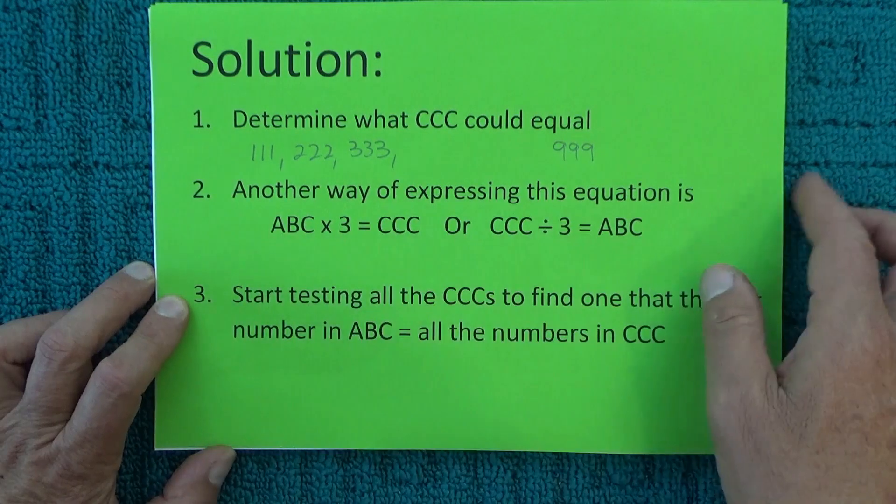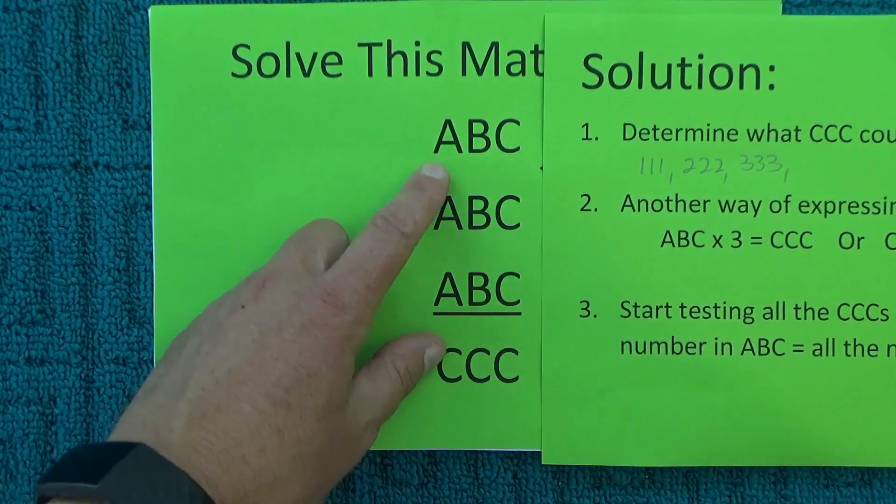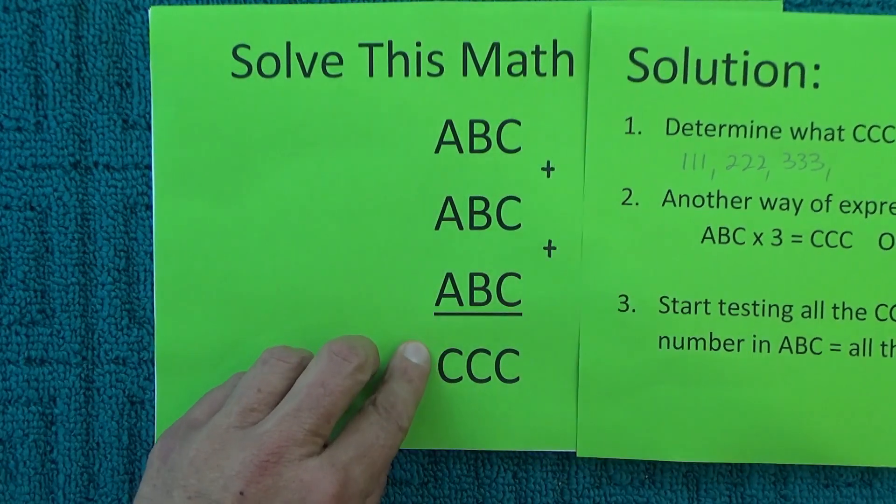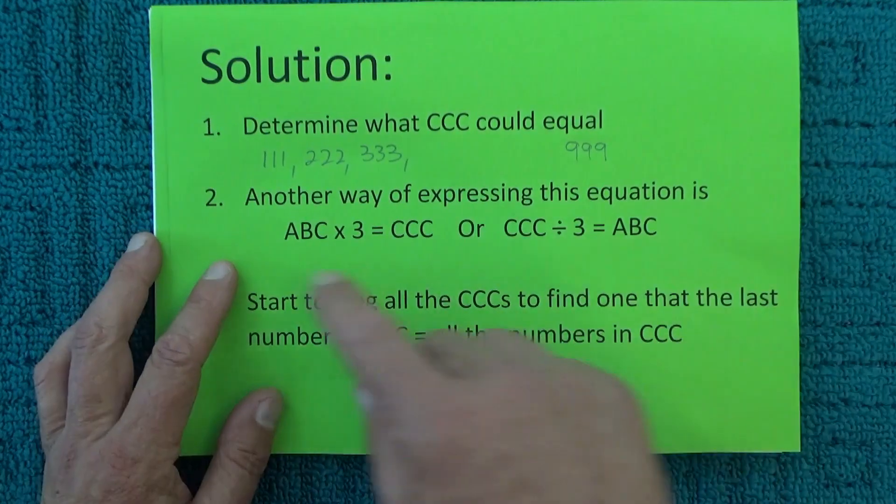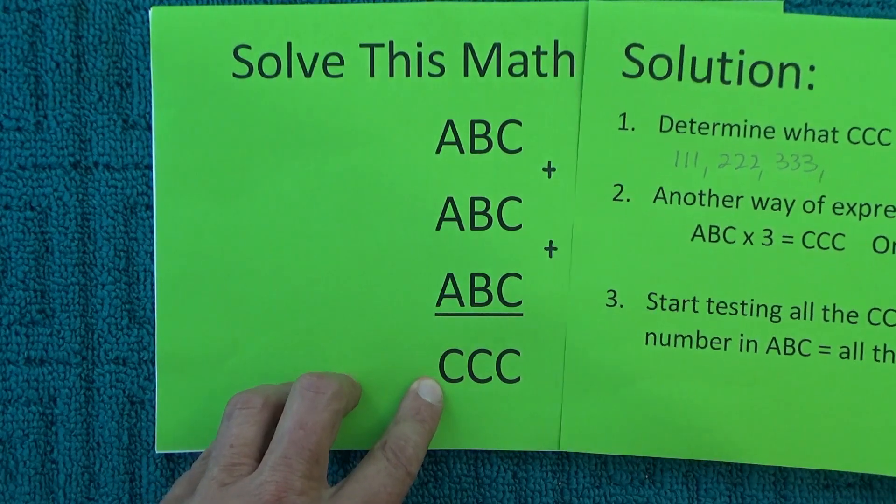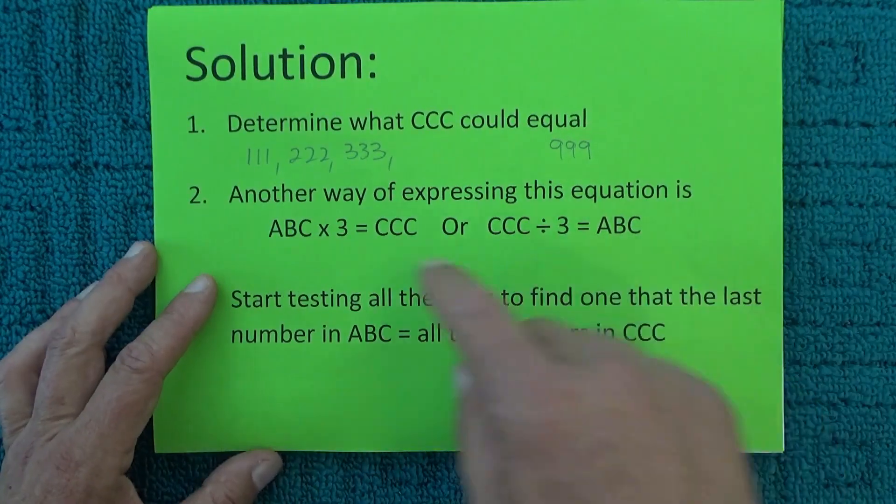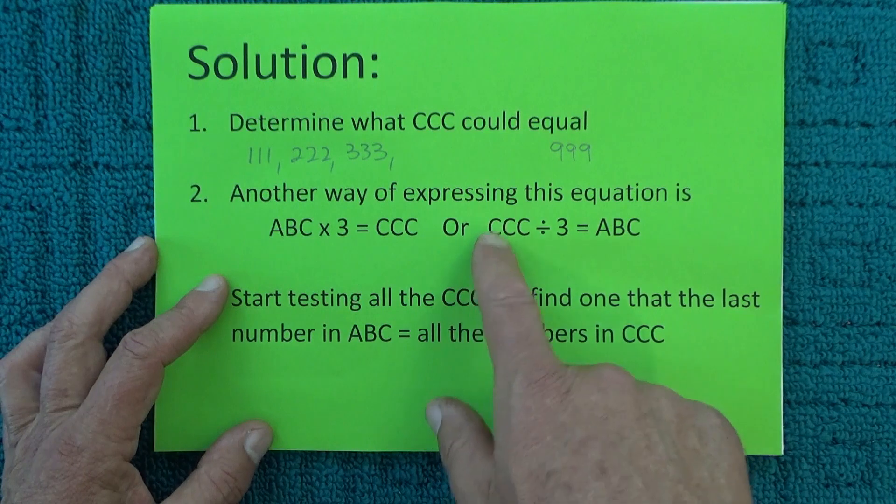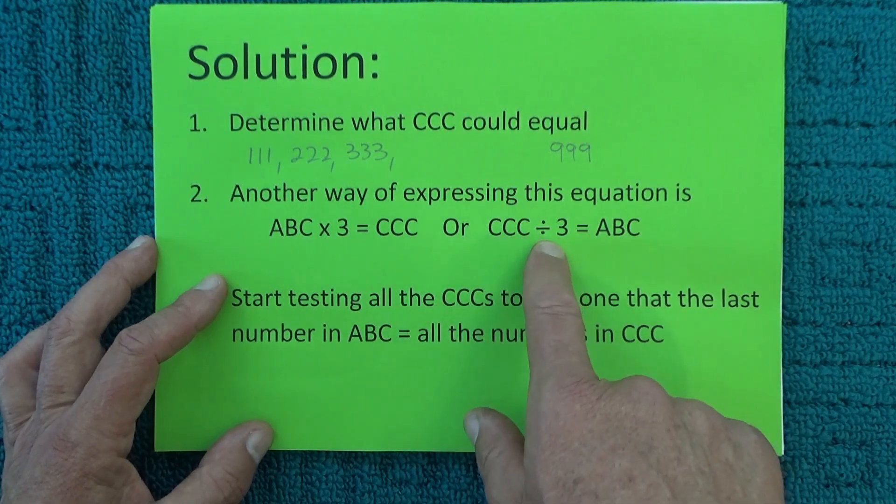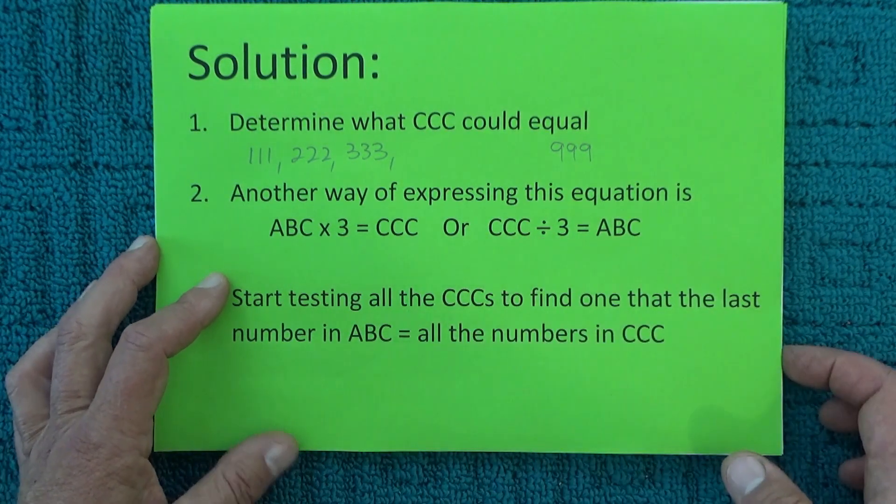Another way of expressing our original equation is ABC × 3 = CCC, because it's 3 lots of ABC. Or we can swap that around: CCC ÷ 3 = ABC.